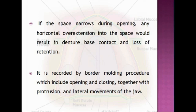The coronomaxillary space is recorded by border molding procedure which includes opening and closing together with protrusion and lateral movements of the jaw. If the coronomaxillary space broadens or remains the same size on opening, then a gentle molding of the region by pulling the cheek out, down, and inward is done.